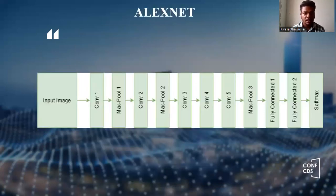AlexNet architecture process: first, one input layer, followed by the convolutional layer, max pooling layer, and finally the softmax layer.